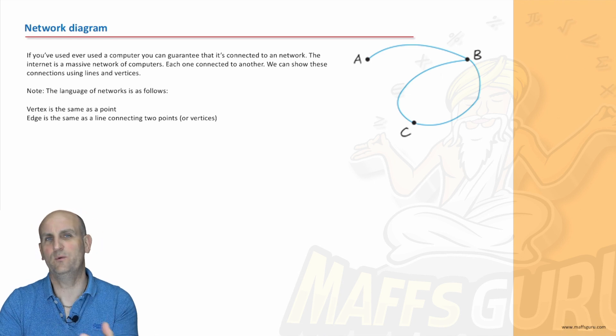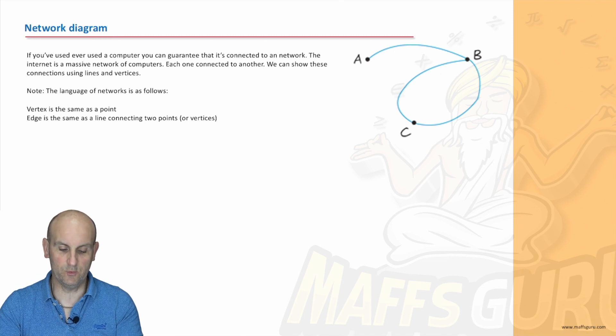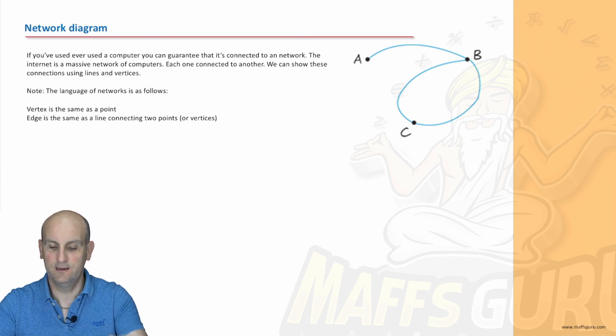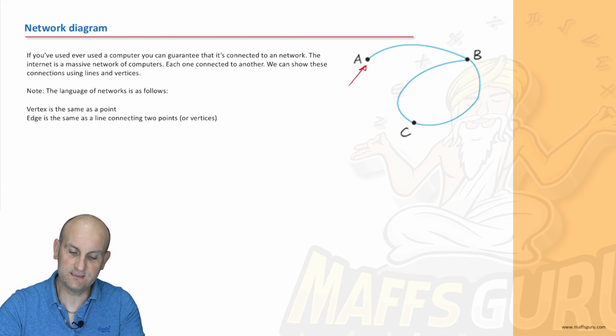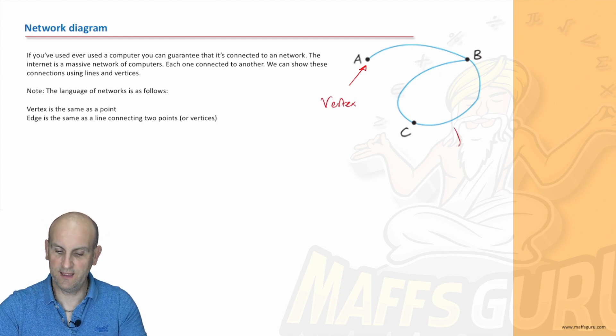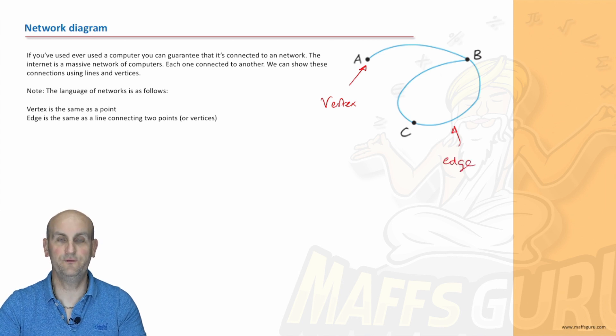Now again when we deal with networks for some reason they decided let's change the language. We won't call it a point we'll call it a vertex. And we won't call it a line we'll call it an edge. Alright so these things here are vertices so that's a vertex there and obviously the plural is vertices and that there ladies and gentlemen is what we call an edge.